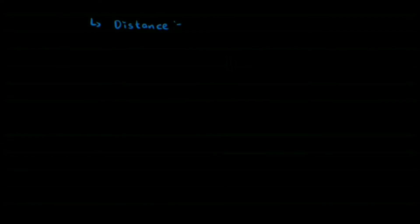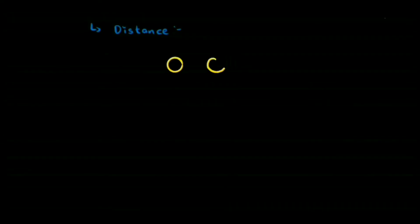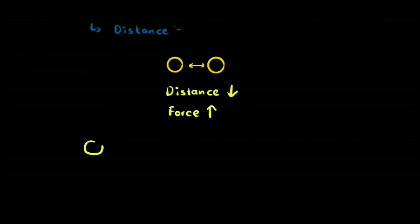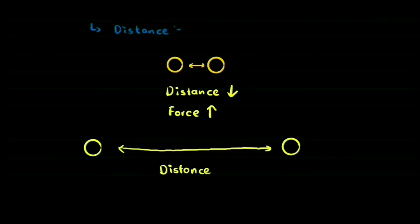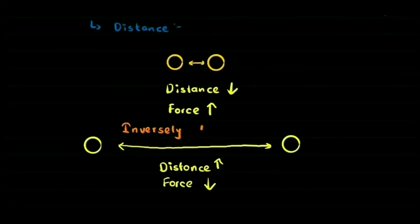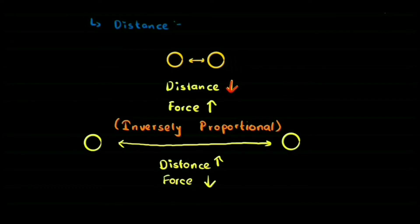Now let's look at distance. We have two tiny objects which are very close to each other, so the distance is extremely low. In this case the gravitational force between them is going to be high. And when we put these same two objects far away from each other, their distance is extremely high. Then in this case the gravitational force between them is going to be less, because they are very far from each other. This is an inversely proportional relationship, where when distance decreases force is increasing and when distance increases the force is decreasing.